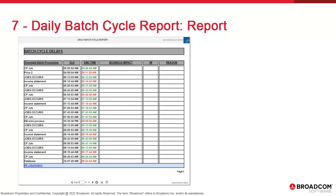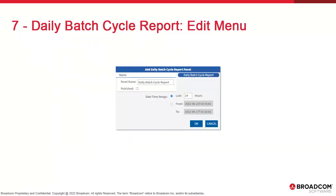The table shows the full list of job stream runs grouped by business area. We also have the defined SLA, the end time in green for normal runs and red for SLA overruns. The last three columns — business impact, IM, and reason — are there for reasons of descending compatibility and are inactive as a result. The edit menu is very simple and has no filters; you simply set the reporting period.